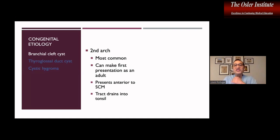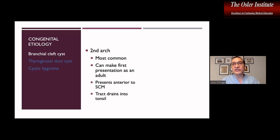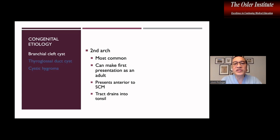One critical point is that a branchial cleft cyst can make its first presentation in an adult. A patient can go through their entire pediatric and adolescent development with no manifestation of the cyst until adulthood — maybe after an upper respiratory infection, for example — when the cyst becomes inflamed and enlarges and shows for the first time. So the lack of a cystic manifestation during childhood or adolescence does not preclude the diagnosis of a branchial cleft cyst.